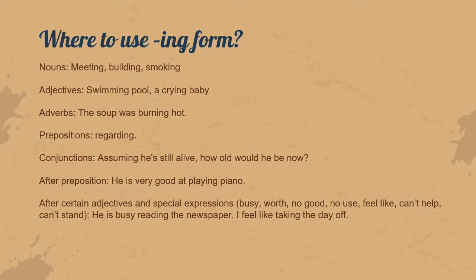Where do we use the ing-form? There are different cases. It's not only used for verbs, but also for nouns — for example, 'meeting', 'building', or 'smoking'. An example could be 'smoking is bad for you', where 'smoking' is a noun. But it can also be used as a verb, for example 'he is smoking', which is the continuous tense.